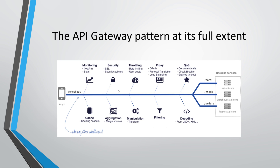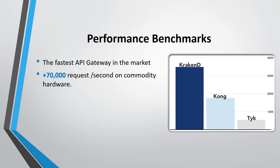Next we can see the performance benchmark of KrakenD API gateway — it is currently the fastest API gateway on the market. It's new and delivers 70,000 requests per second on commodity hardware. In the benchmark illustration, KrakenD is on top, followed by Kong in second and TYK in third. Based on hardware capability, it fulfills those requests.